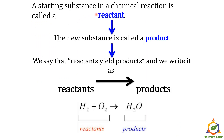A starting substance in a chemical reaction is called a reactant. A new substance which is produced is called a product. We say that reactants yield products. We always write all the reactants on the left-hand side, then an arrow, and then the products on the right-hand side. Never make that mistake when writing a reaction.